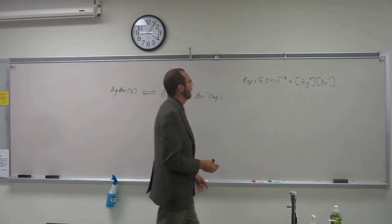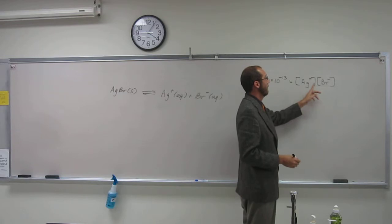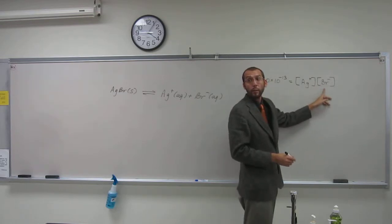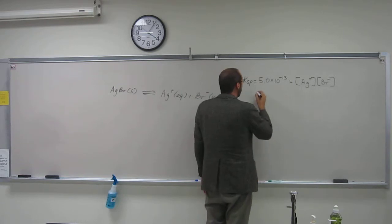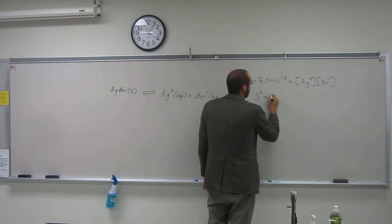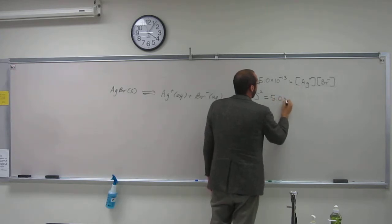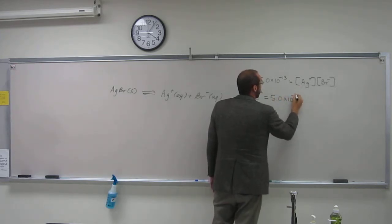So if you look, this is S, this is S, right? So it's going to be S squared there. So S² is going to equal 5.0 times 10 to the negative 13.